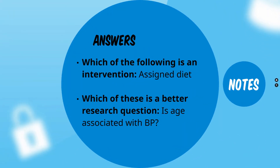Assigned diet is an intervention. We can have two types of studies: experimental or observational. If we are assigning a diet to one group versus no diet assignment or an exercise regimen, that's experimental. If we simply capture what people are eating, that's an observational study. The better research question is: is age associated with blood pressure? Causal questions require a very specific experimental design, so often our questions look at association, correlation, or relationship.